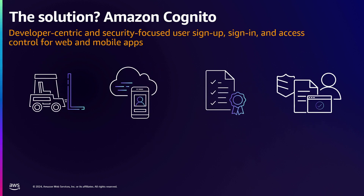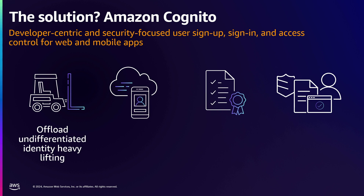So what's the solution? Amazon Cognito. It is a developer-centric and security-focused customer identity and access management service. It can provide you all the user sign-up and sign-in for your web and mobile applications. We like to call this offloading the undifferentiated heavy lifting. Don't spend time and resources on building customer identity, but instead leverage something like Amazon Cognito to provide that for your applications.